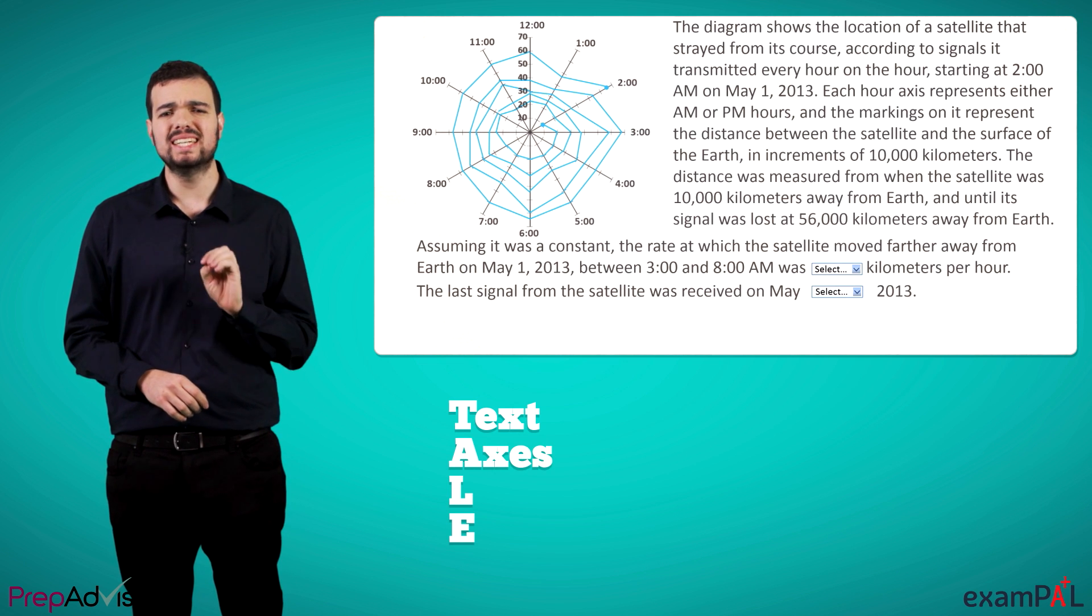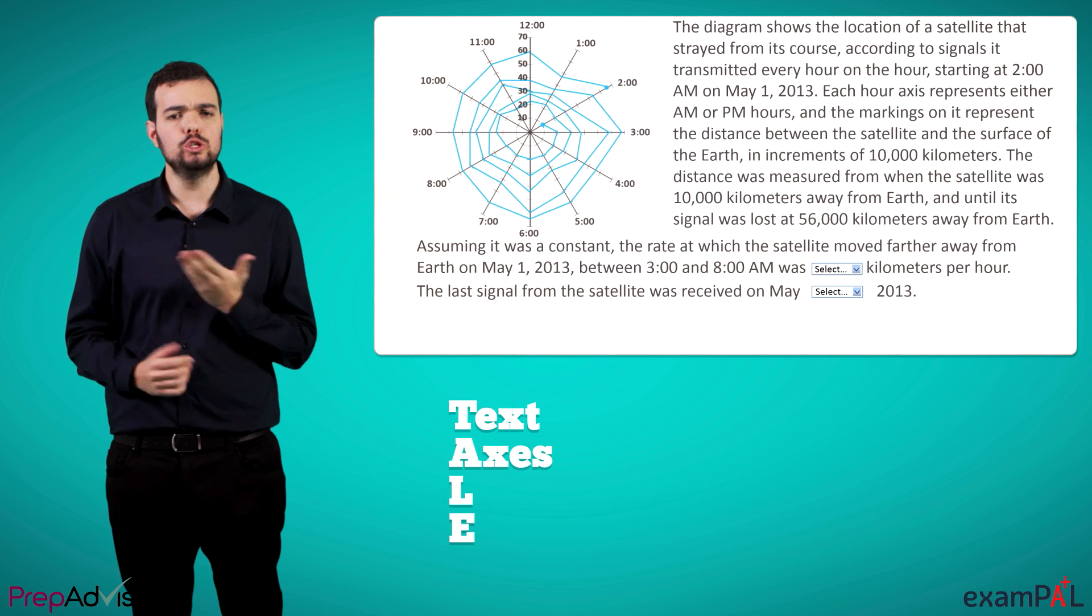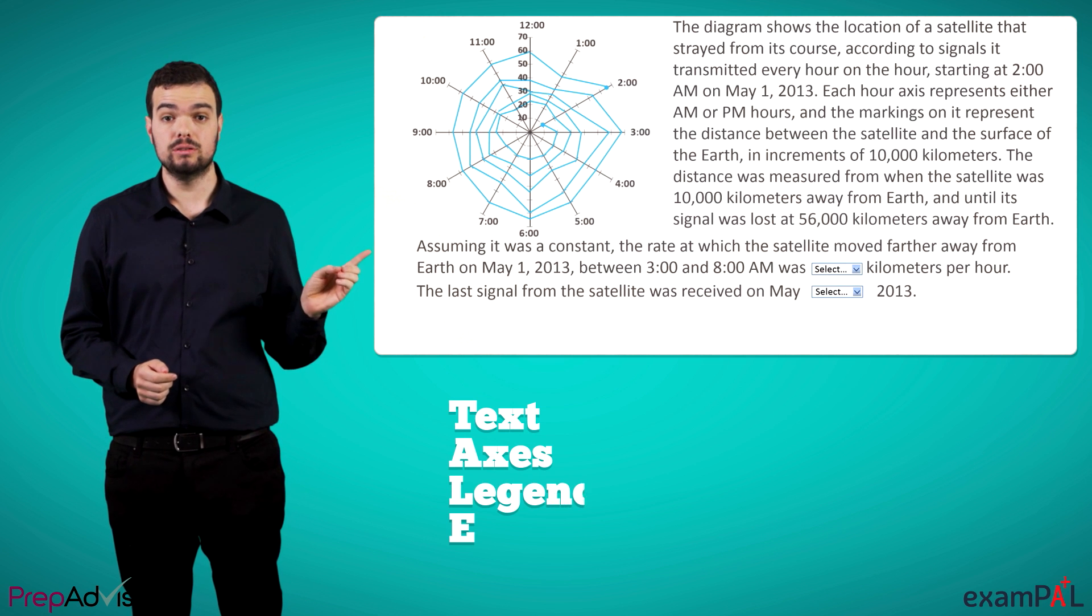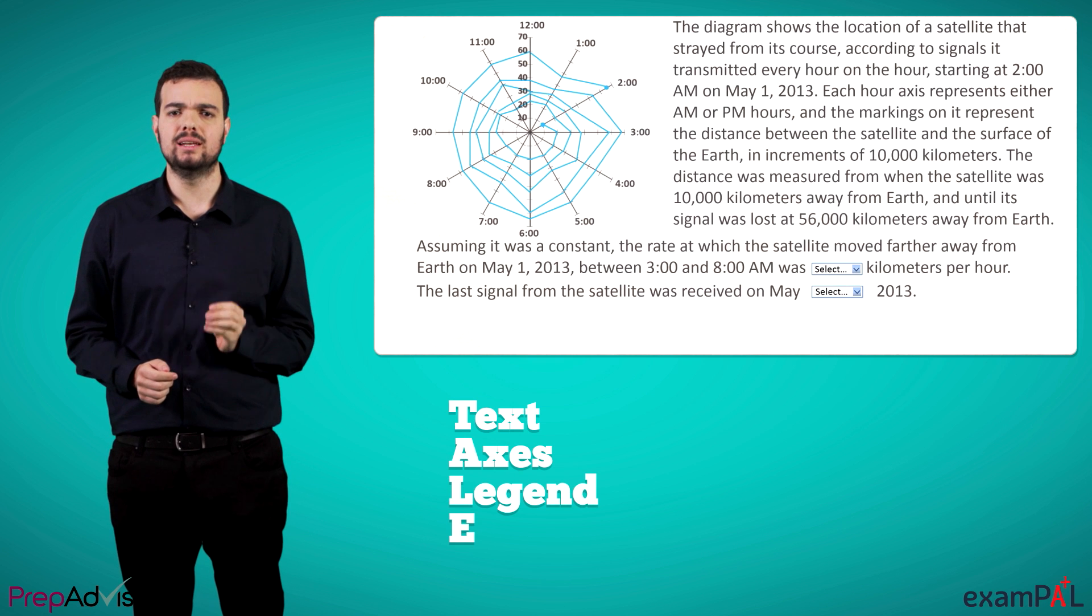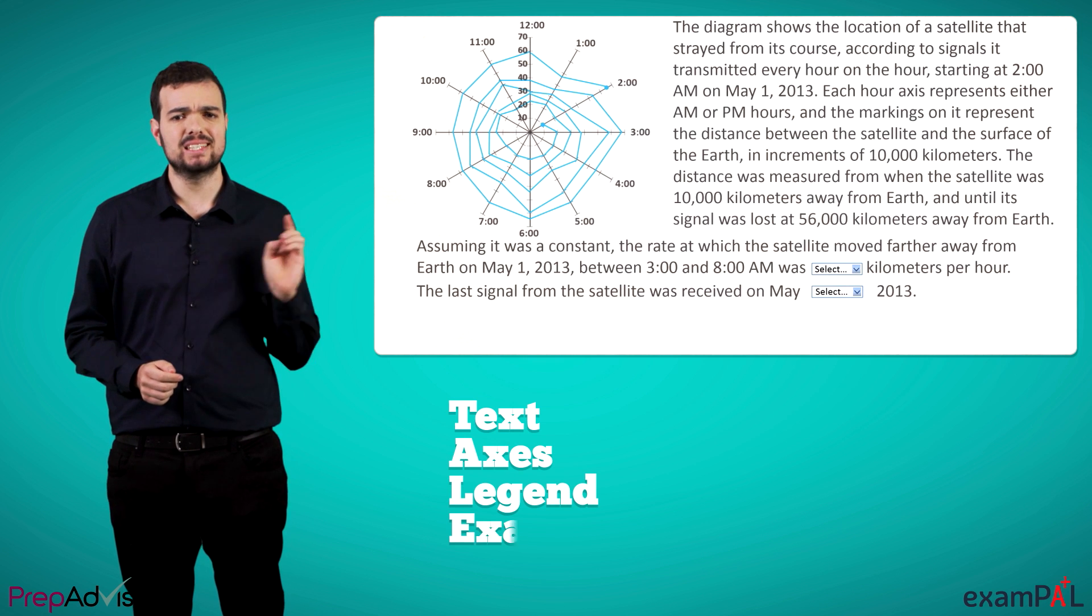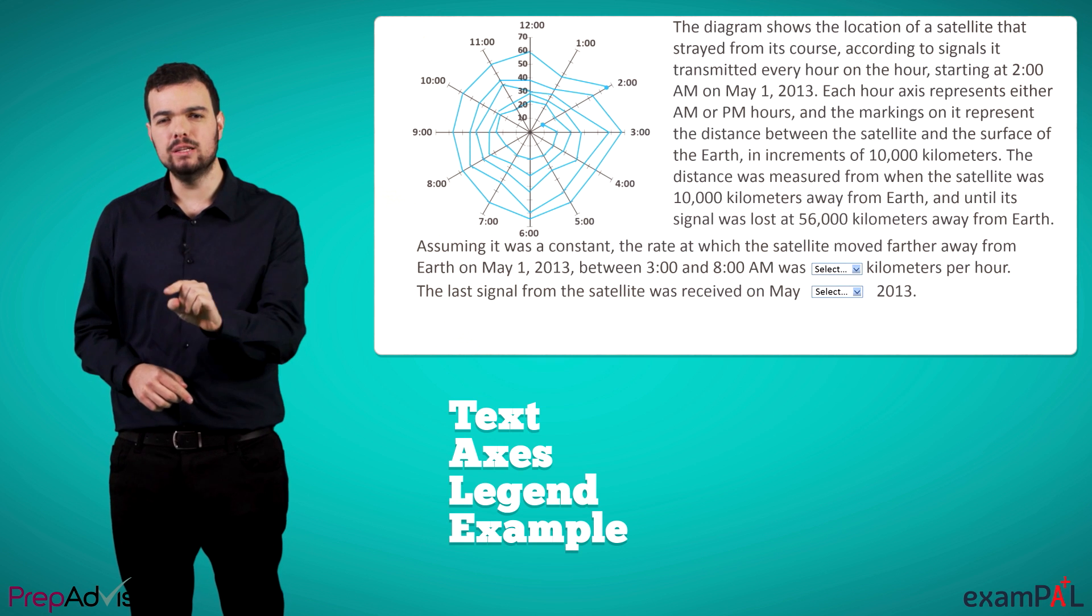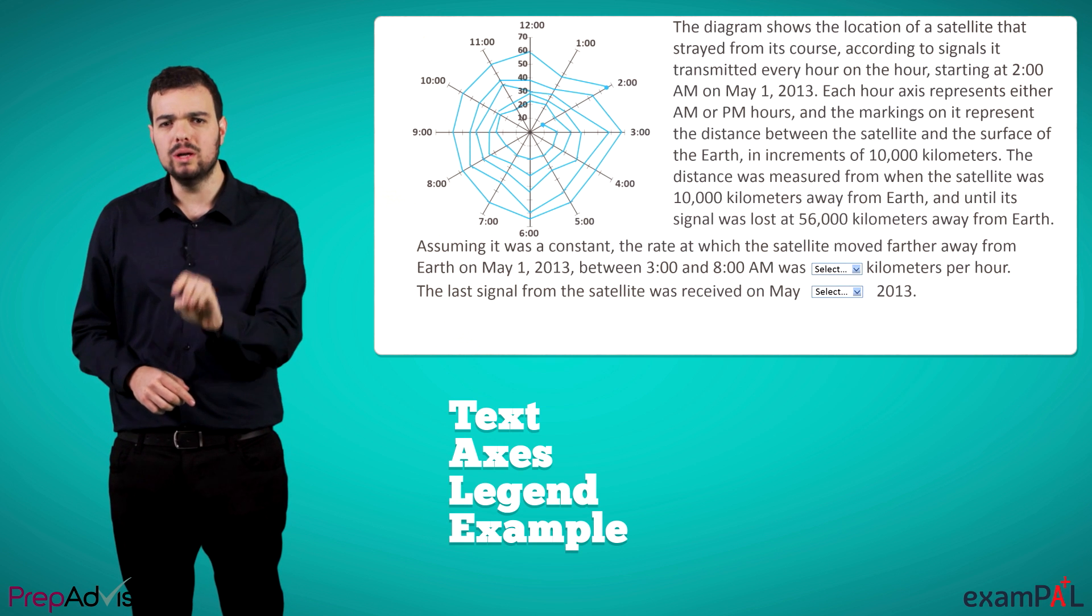Axes. What does each axis represent? In which units? Legend. What does each symbol, color, or texture represent in the graph? And example. We'll pick a random point and ask ourselves, what does it represent?